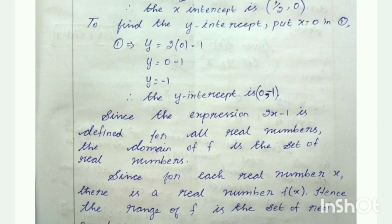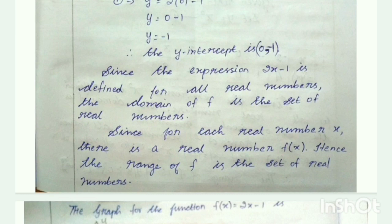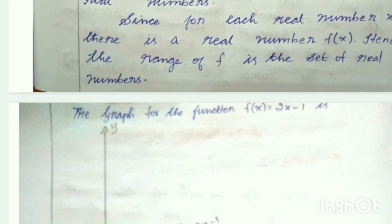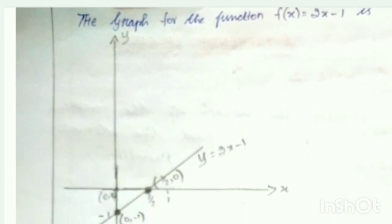Now taking those 2 points, we have to plot them in the graph. We plot the 2 points and join them, and we will be getting the graph for this function.